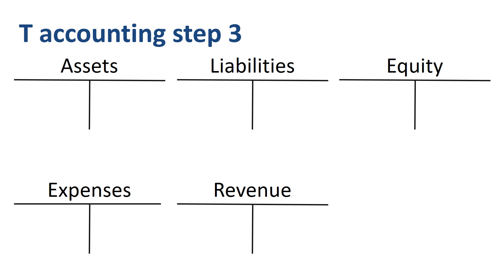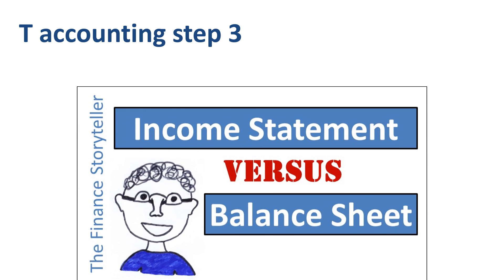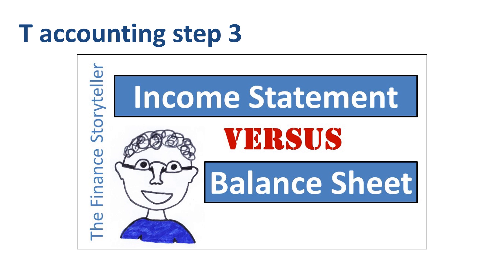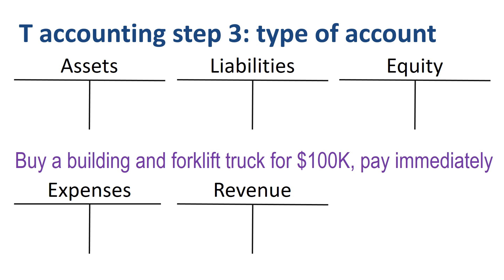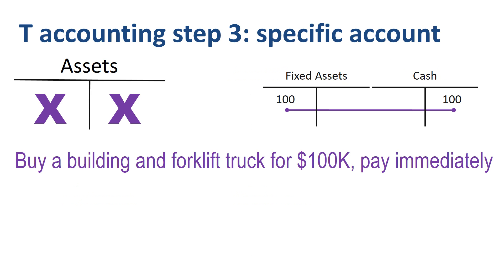T-accounting step 3. For every journal entry that you want to visualize with T-accounts, decide first which type of account you need — asset, liability, equity, revenue, or expense — and then which specific account in that category. Let's take an example: buy a small building and a forklift truck for $100,000 in total for our chocolate shop, and pay immediately. You see a specific type of assets going up in the first part, and another type of assets going down in the second part. Fixed assets go up — we need to add debits to this account. Cash is going down — we need to add credits to this account.